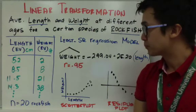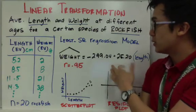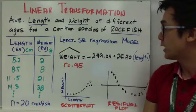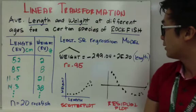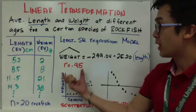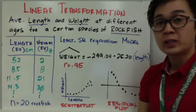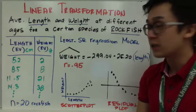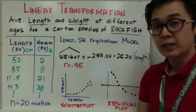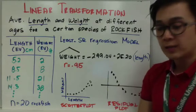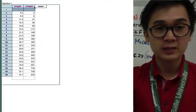Using our calculator with the least squares regression model, we generated the model: predicted weight = −299.04 + 25.20 × length, with a correlation of 0.95. By just looking at the correlation alone we know they have a strong positive relationship — but can we trust our model in predicting an outcome? Let's check our scatter plot and residual plot.